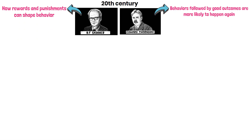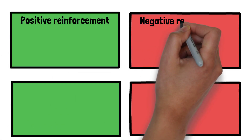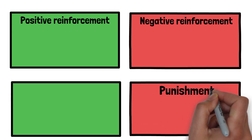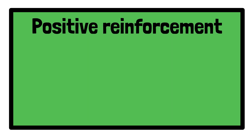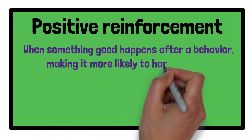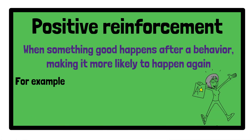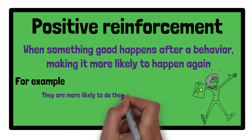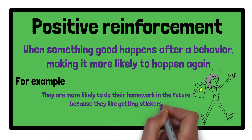There are four main types of reinforcement: positive reinforcement, negative reinforcement, punishment, and extinction. Positive reinforcement is when something good happens after a behavior, making it more likely to happen again. For example, if a student gets a sticker for doing their homework, they are more likely to do their homework in the future because they like getting stickers.